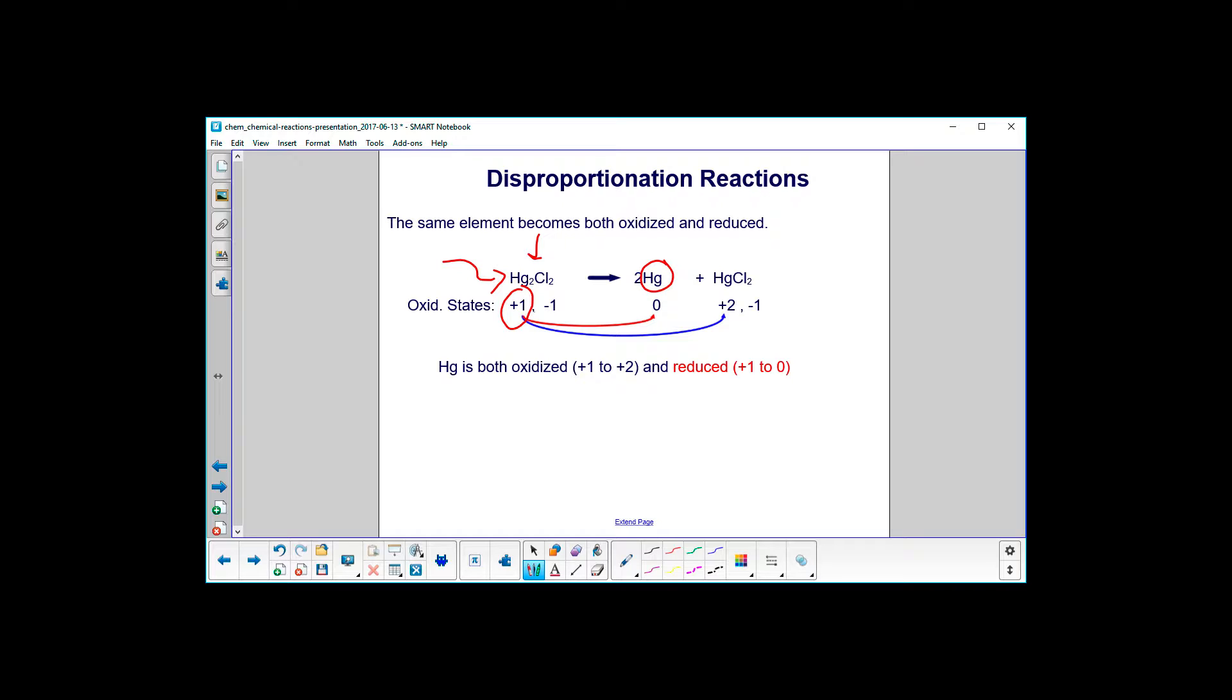Over here, mercury is neutral, has a zero oxidation state. Then over here, mercury chloride, chlorine each is negative one, so there are two of them, so two times negative one gives you a charge of negative two, which means the mercury here has to be plus two to balance it out.